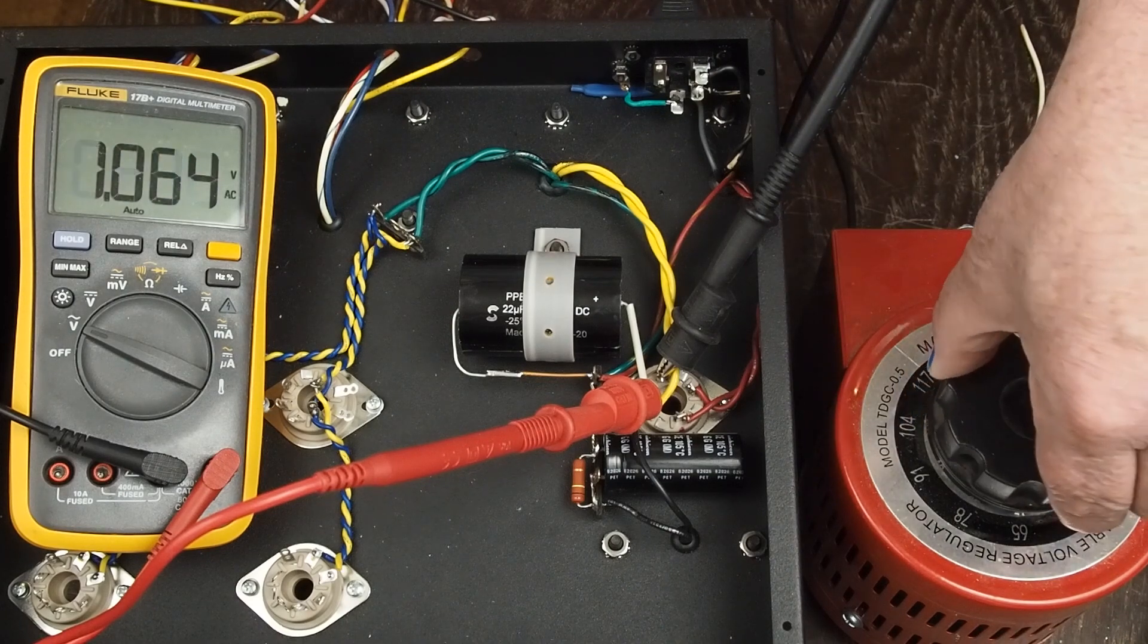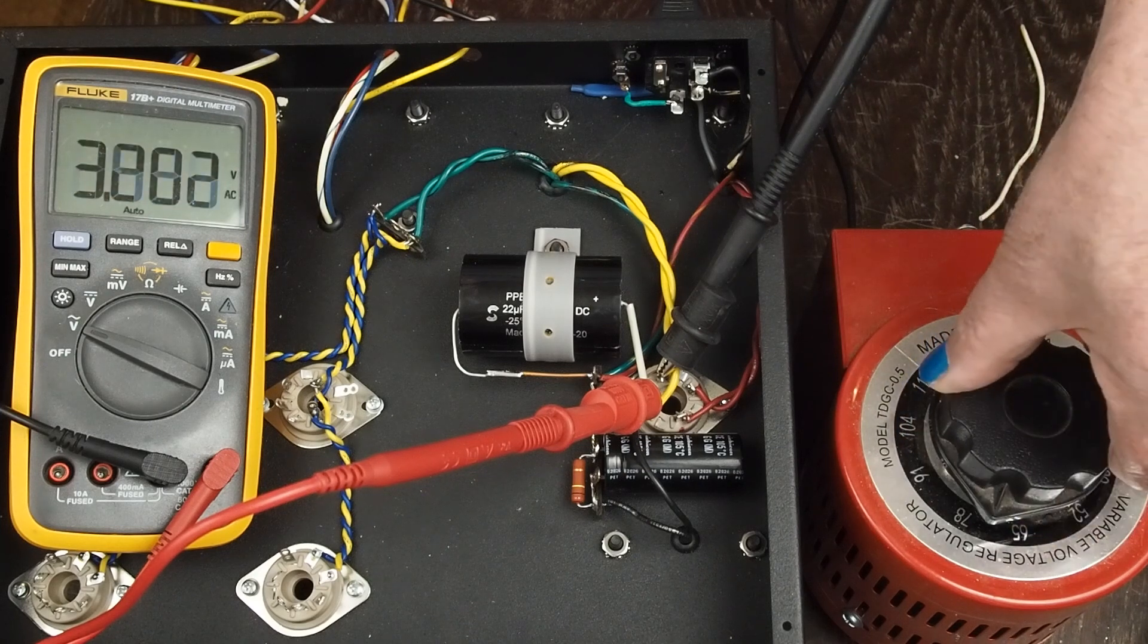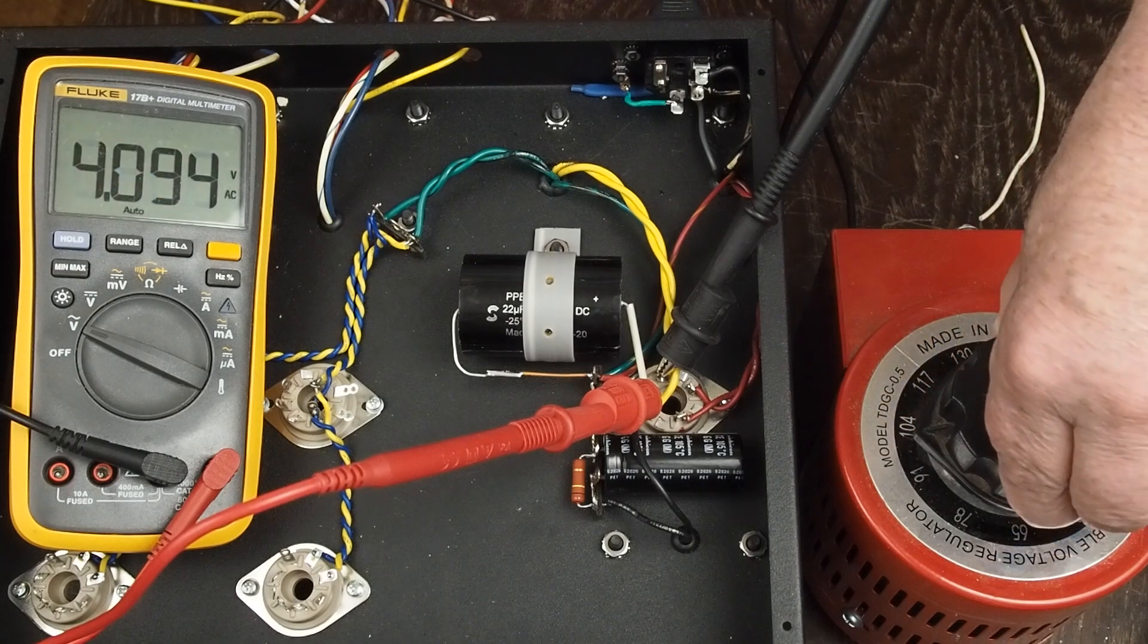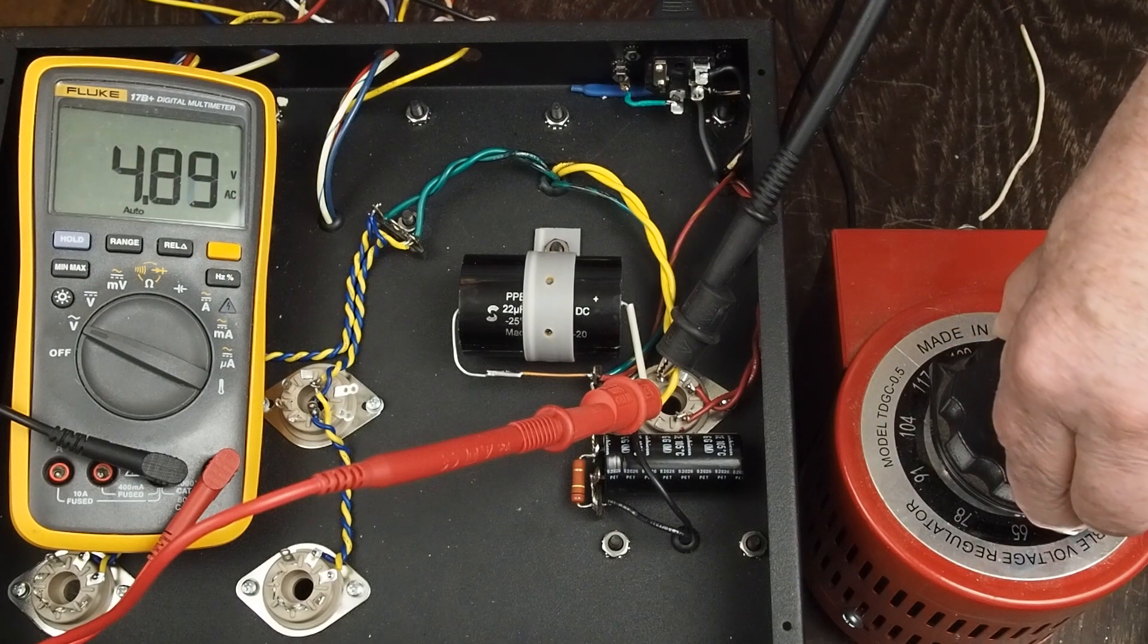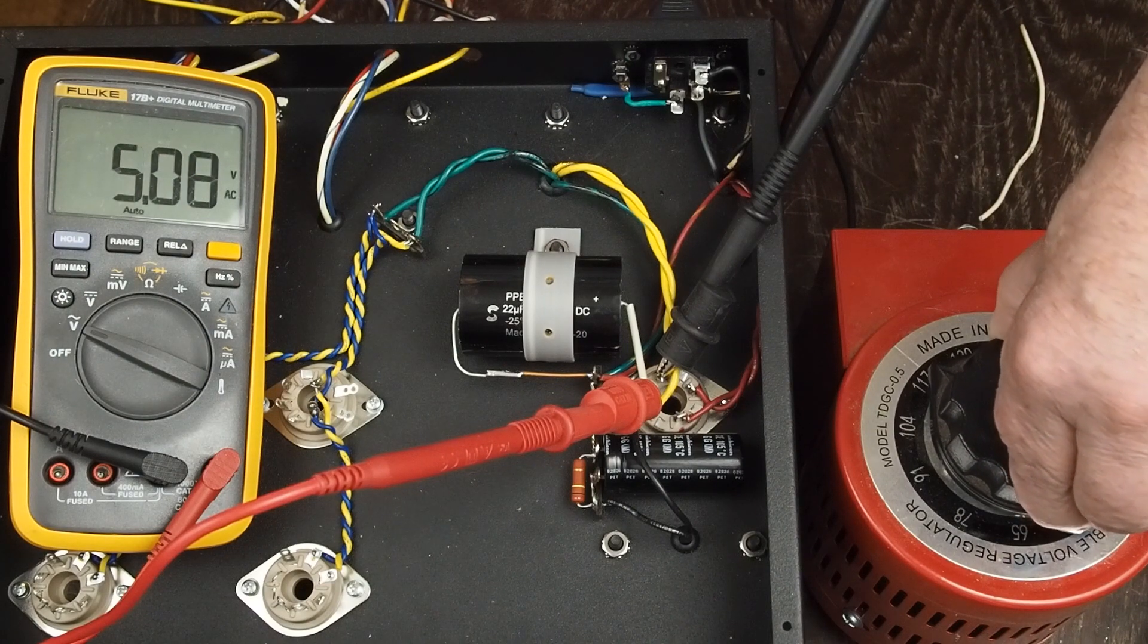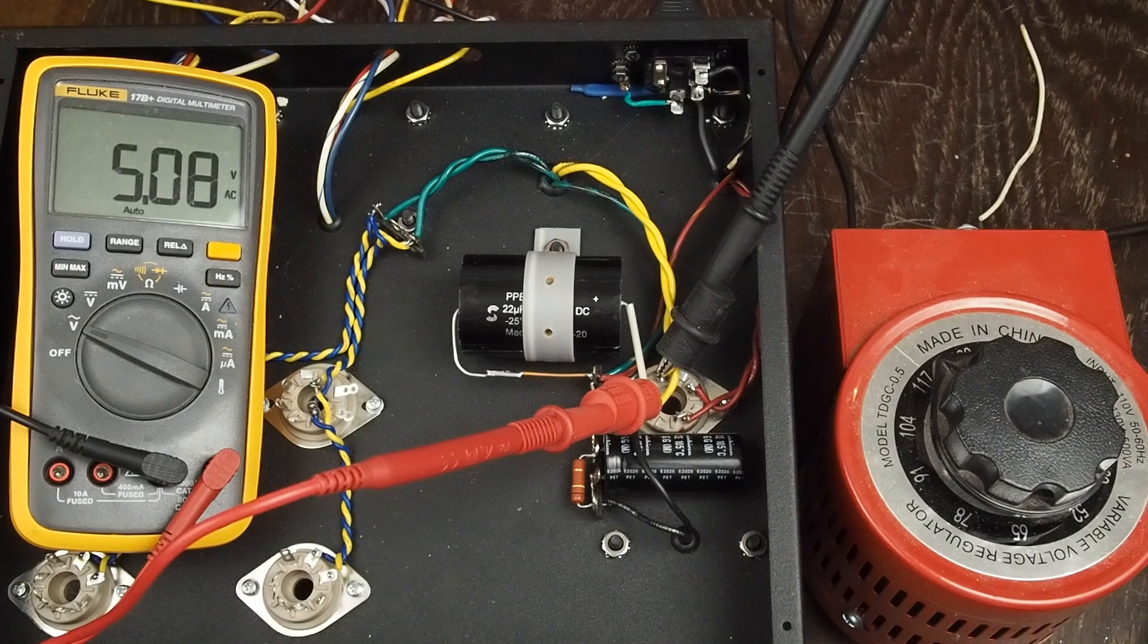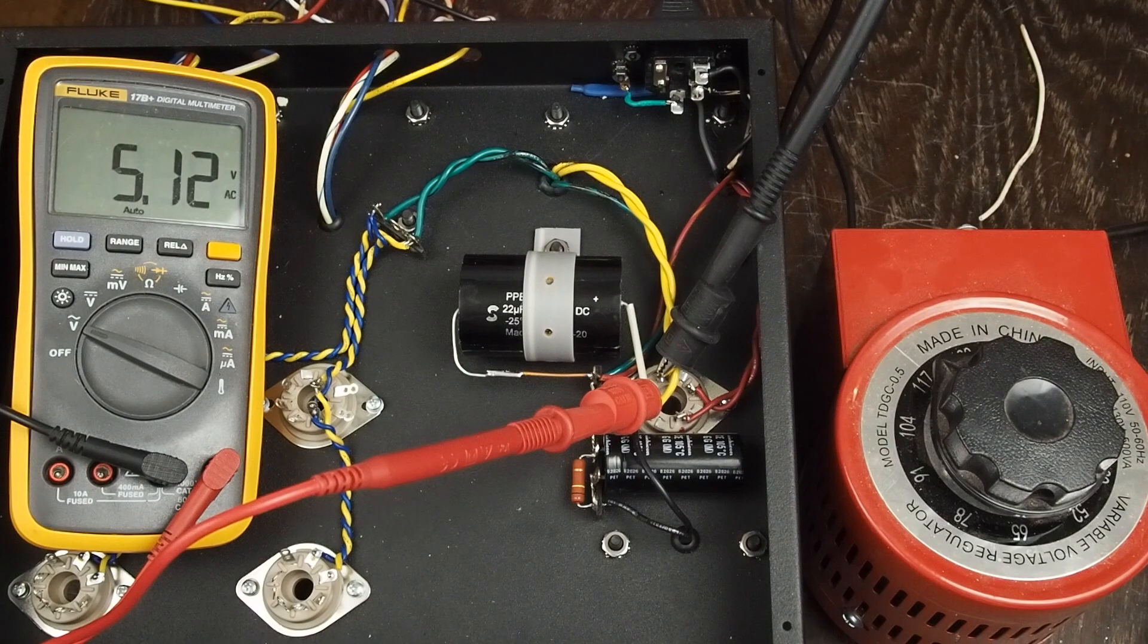So we're going to pull this up and I know where five volts is on this transformer, or what 120 volts is on this transformer. And there's five volts. It's 5.1. Once we get the tube in there and get some load on the windings we'll be right at five volts.